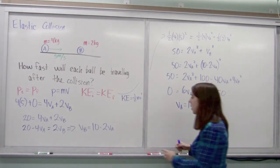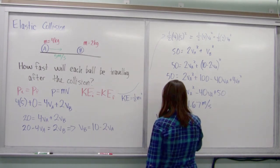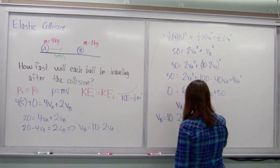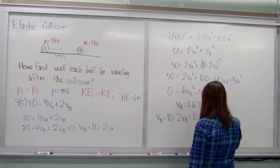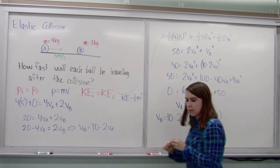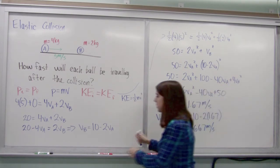And if we have VA, then I can easily solve for VB. So I go VB is equal to 10 minus 2 VA. 10 minus 2 times 1.67. And that gives me 6.67. And I should box my answers.